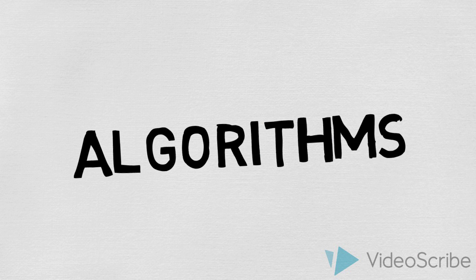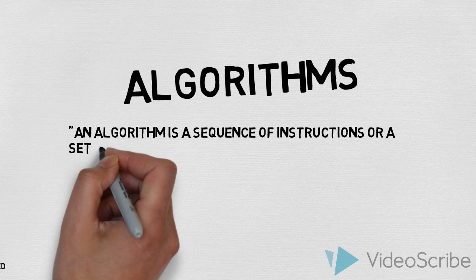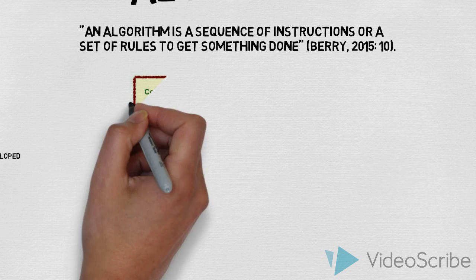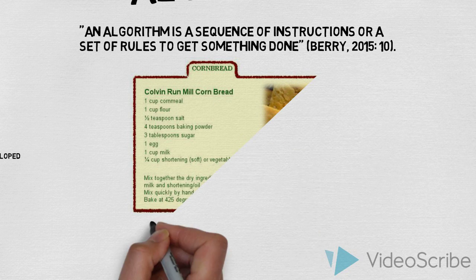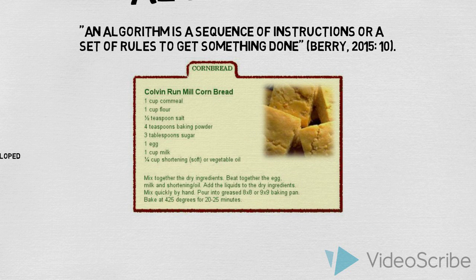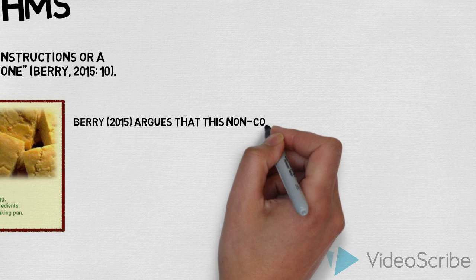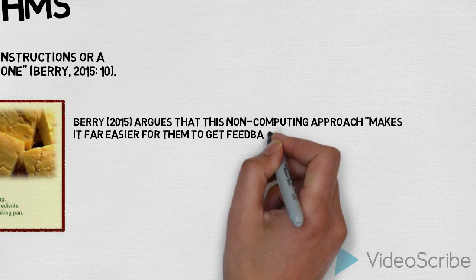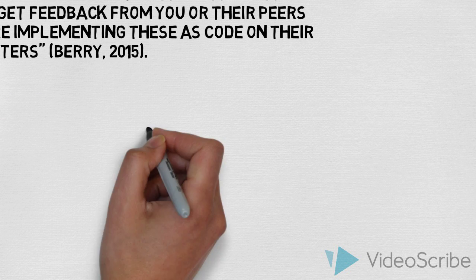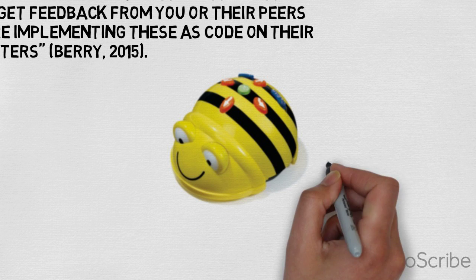An algorithm is a sequence of instructions or a set of rules to get something done. Teaching algorithms doesn't have to be confined to computing — algorithms are present in everyday life, such as school routines or following a recipe. In practice, pupils could physically write an algorithm to get a better understanding, for example making a jam sandwich. Berry argues that this non-computing method makes it far easier for them to get feedback from you or their peers on their algorithms before implementing these as code on their computers. Knowledge of algorithms is then transferred to the use of Bee-Bots or Scratch for programming.